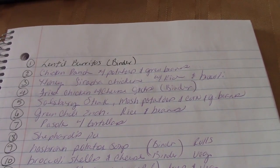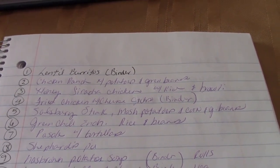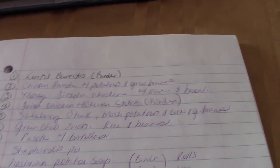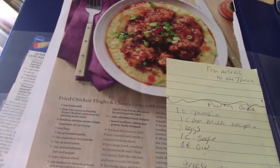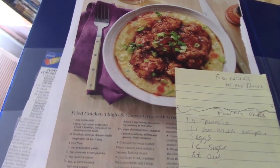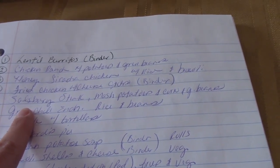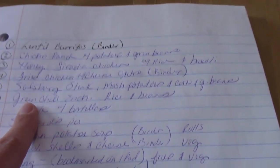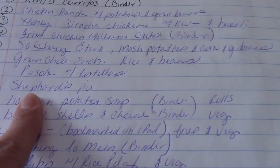Okay, so I'm all done with my 19 meals. We're gonna do lentil burritos, chicken ranch with potatoes and green beans - that's where you put it all in a baking dish and you sprinkle it with ranch dressing mix and butter, it's really good. Honey sriracha chicken with rice and broccoli, fried chicken with cheese grits - I got that recipe from the Rachel Ray magazine and it was the last one that went out, and it is so good. You fry the chicken and you top it with Frank's Red Hot and honey - oh my gosh, the combination of the hot and the sweet is so good. I'm gonna do Salisbury steak with mashed potatoes, corn and green beans, green chili chicken enchiladas with rice and beans, pozole with tortillas, shepherd's pie, hash brown potato soup.